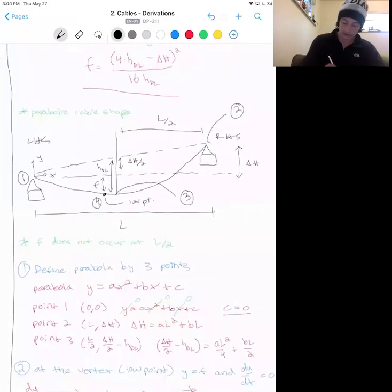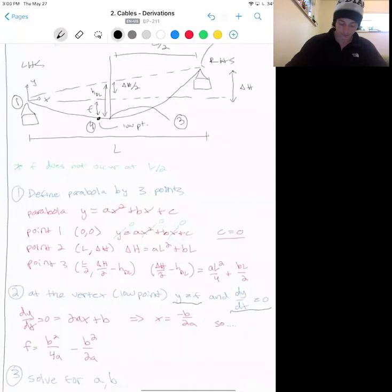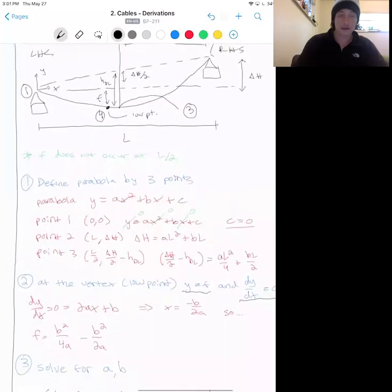At the vertex, which is the low point, y equals f and dy dx equals 0. Finally, we'll solve for a and b in terms of delta H, L, and design sag, and plug into the equation from above and simplify with algebra to get f.